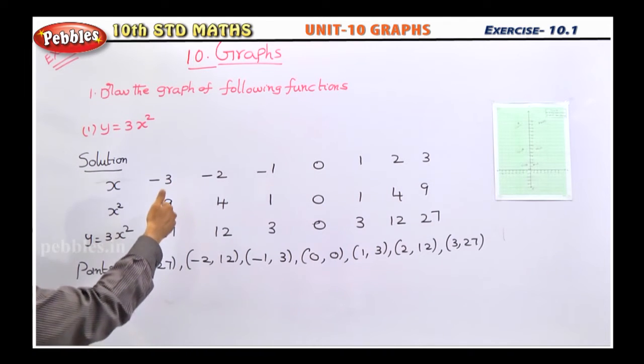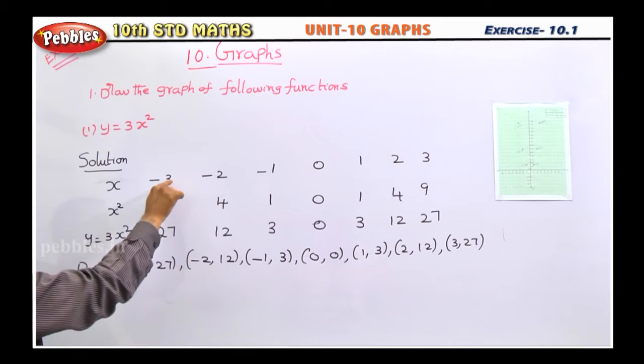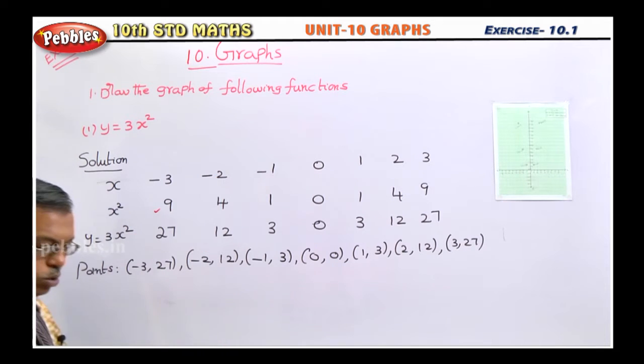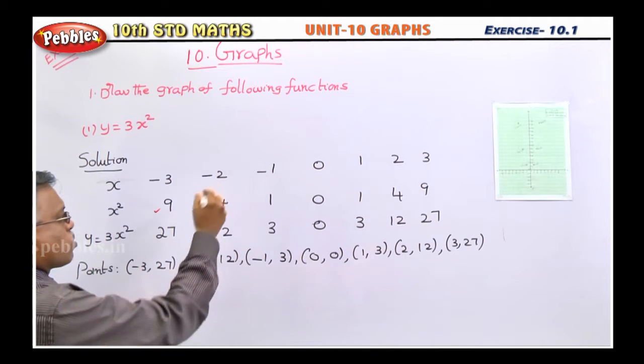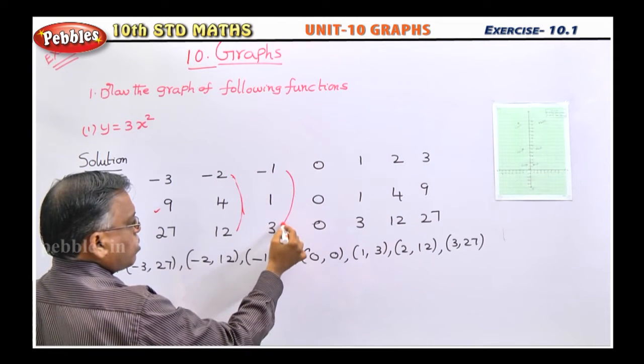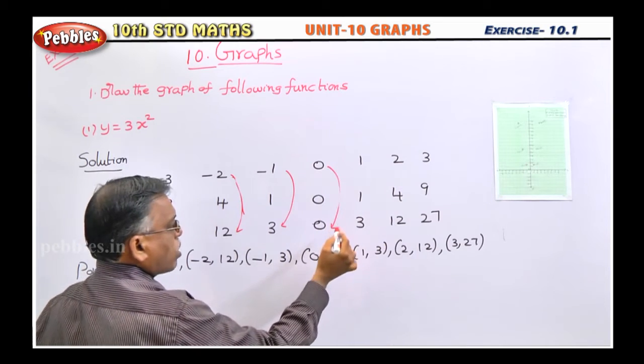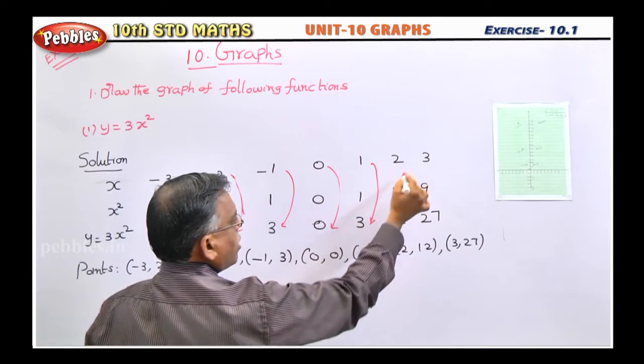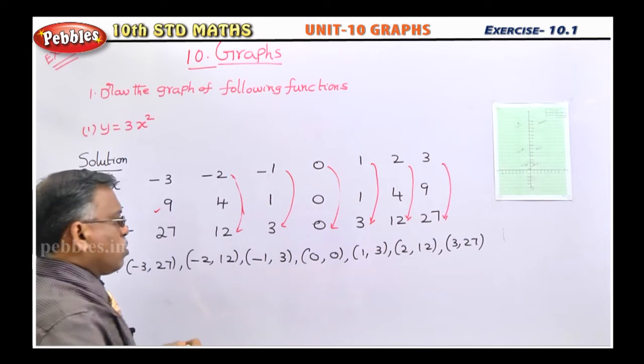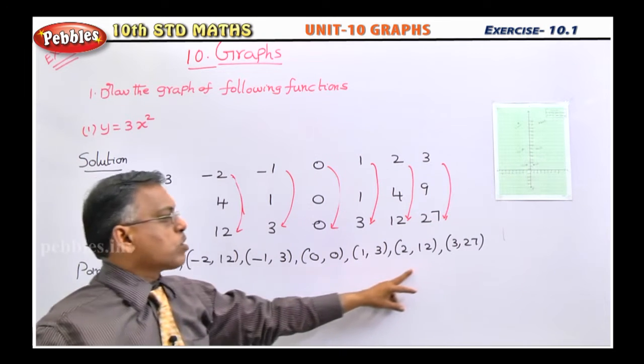Now, what are the required points you need to plot on the graph is for x minus 3, y value 27. That is your first point. For minus 2 the value is 12, that's your second point. Next for minus 1 the value is 3, third point. 0, 0 is only origin point. For 1 it is 3, for 2 it is 12, for 3 it is 27. Those are the points you have to plot.